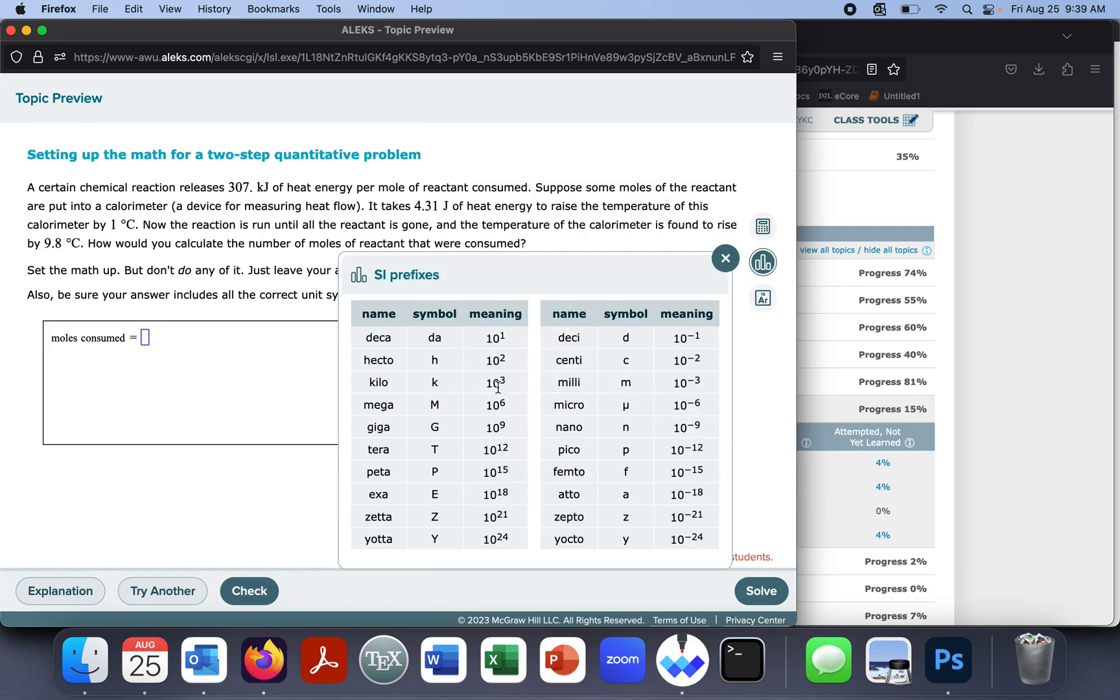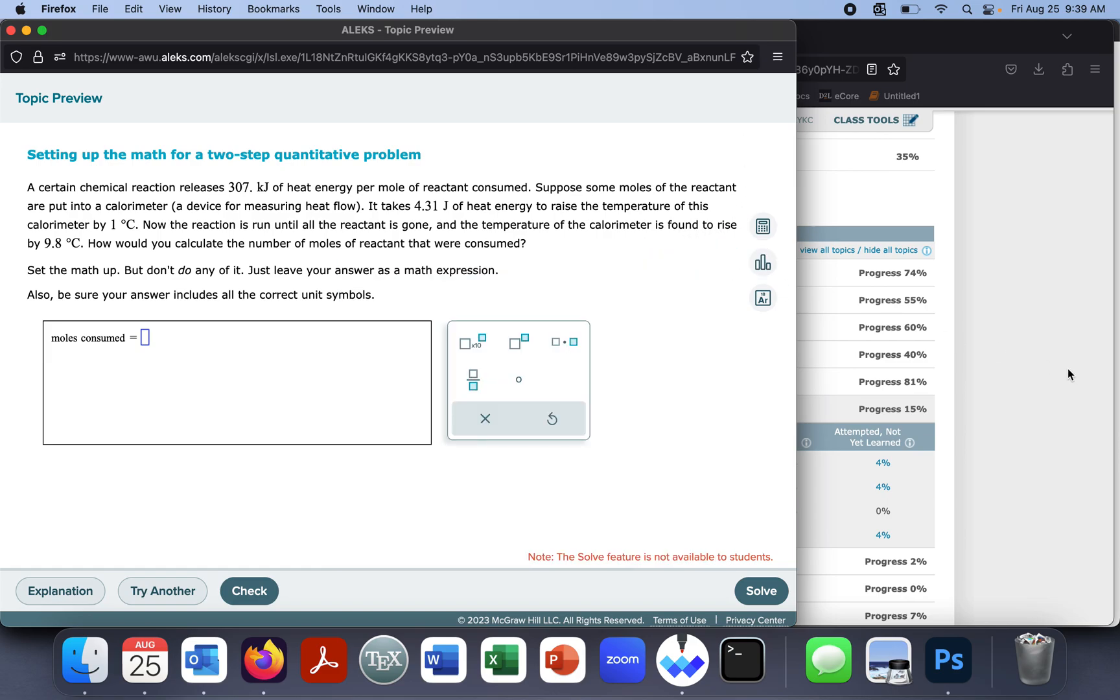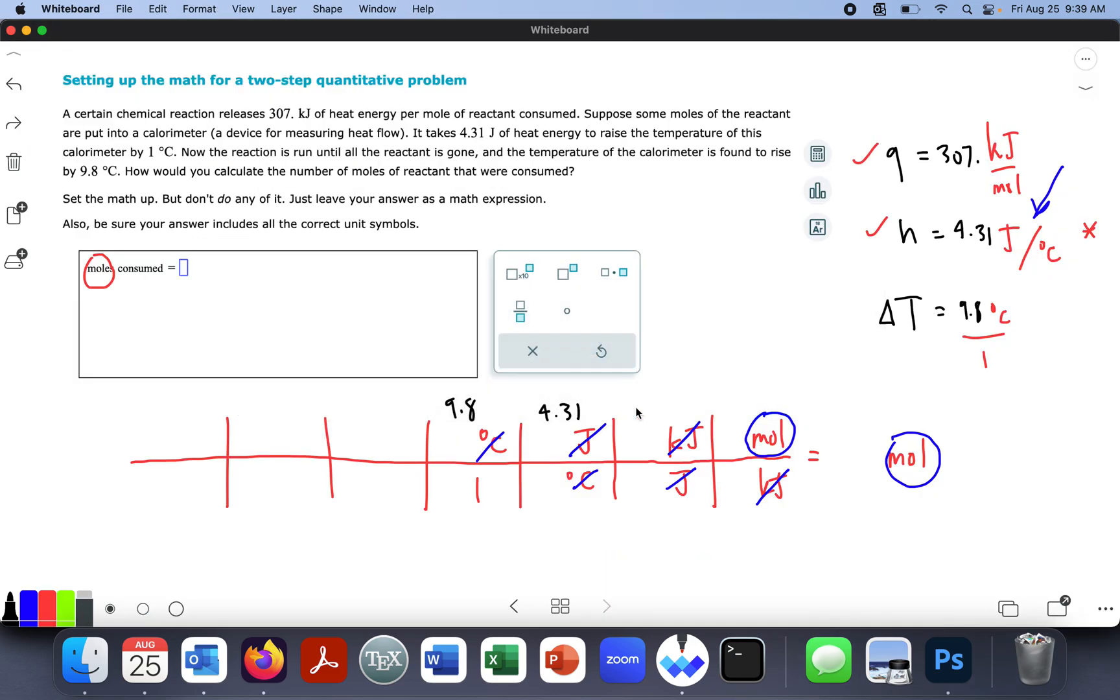So kilo, 1 kilo is 10 to the 3. That's what kilo means. So we've got that there. And what about my kilojoules per mole? So this 307 kilojoules for every one mole.